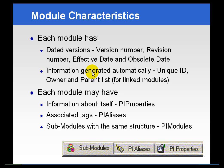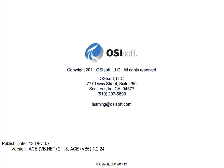Each module does have a lot of information associated with it, like version number and ID, but what we're going to be mostly concerned with are these two items: PI properties and PI aliases. These are places to put various pieces of information that will help applications like PI ACE to run calculations and operate more efficiently and easily for users.